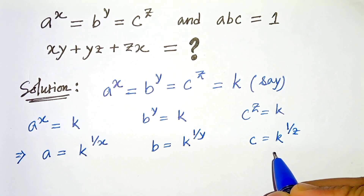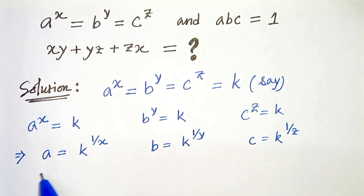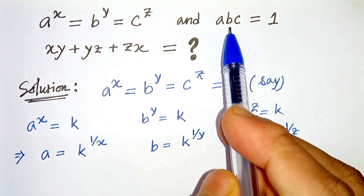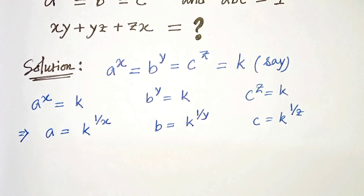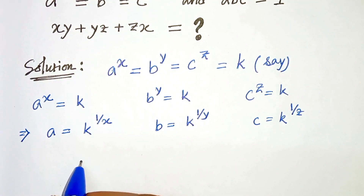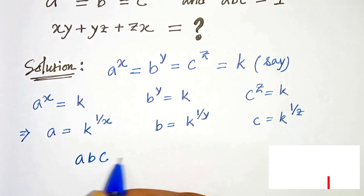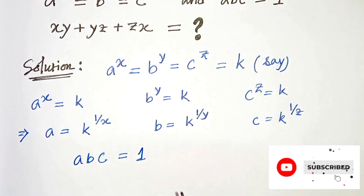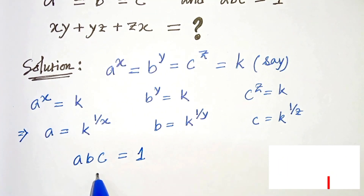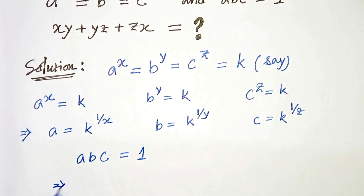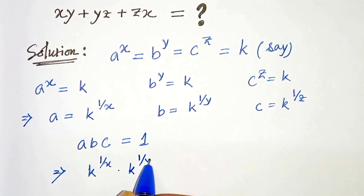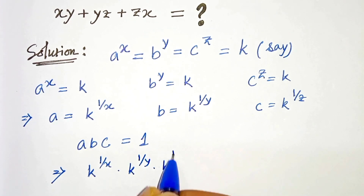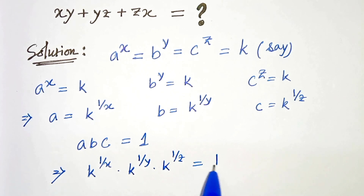Now what we will do is we will plug these a, b, c values into abc equals 1. We are given that abc equals 1. Now we will plug these values into this. So a is k raised to the power 1 over x, b is k raised to the power 1 over y, and c is k raised to the power 1 over z, which together equal 1.